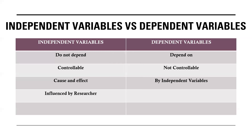Independent variables, unless the researcher influences them depending upon the research problem, research question, and methodology, are not going to vary or change. So independent variables are simply influenced by the researcher, whereas changes in dependent variables are mainly due to changes in independent variables.